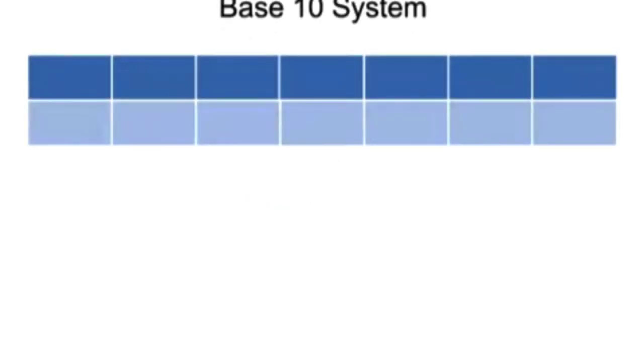Therefore, starting from the right, the first digit position is 1. The second digit position is 10 times the first, or 10. The third digit position is 10 times the second, or 100, and so on.